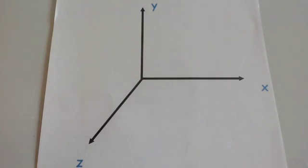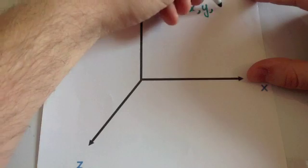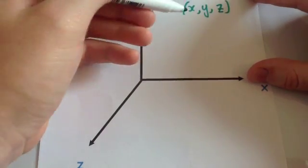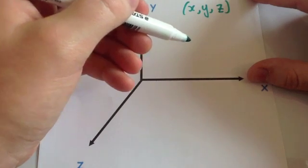So it's obviously in three dimensions. With every coordinate, they're plotted in terms of X, Y and Z. So you'd go along the X axis, then up the Y axis and then out in the Z axis.